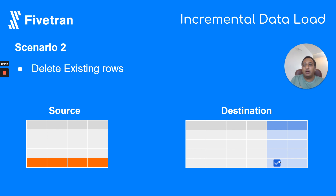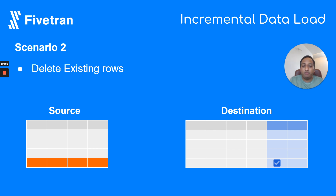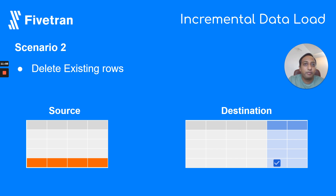Whenever analysts using this table to power dashboards — say on Tableau or similar tools — they should use the Fivetran deleted column to ensure that only the correct rows of data are shown in the dashboards.